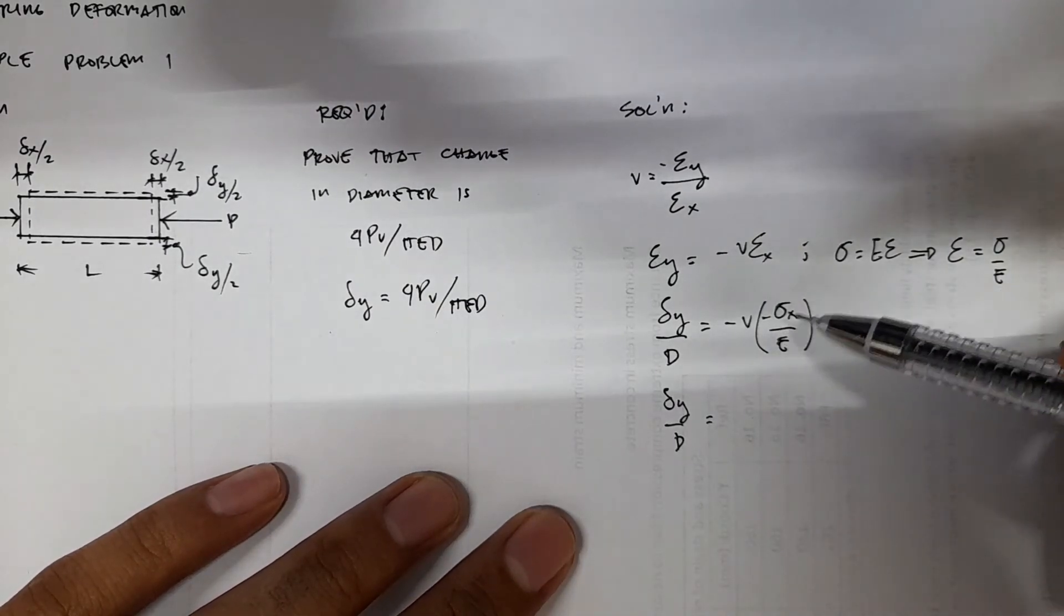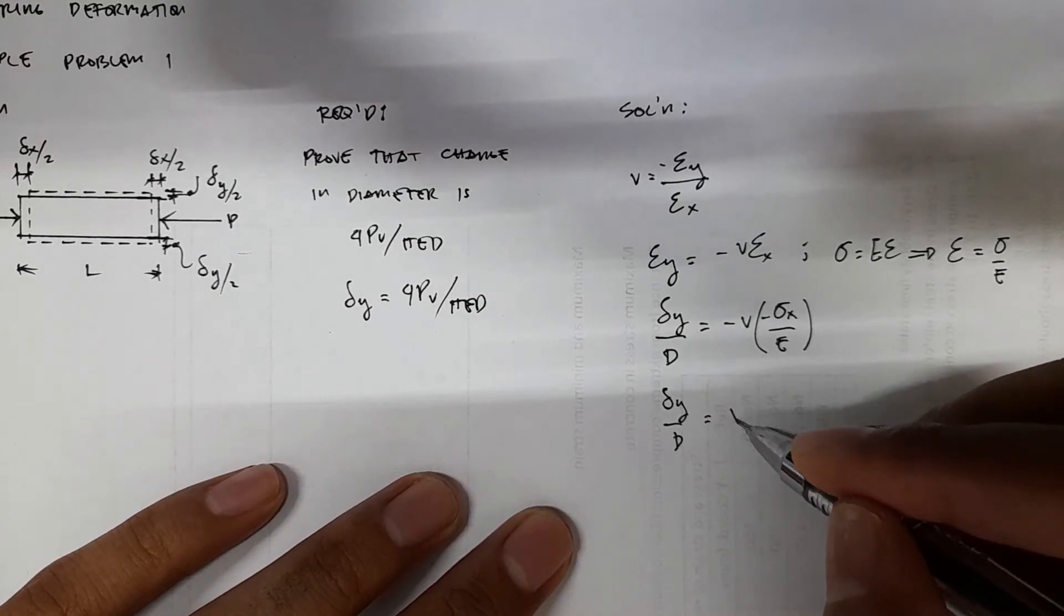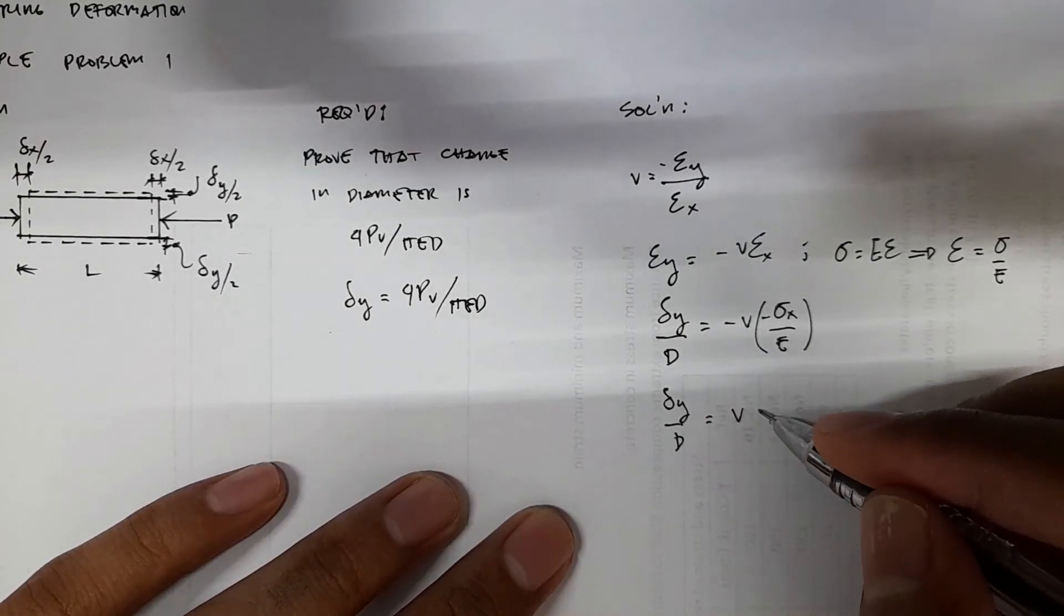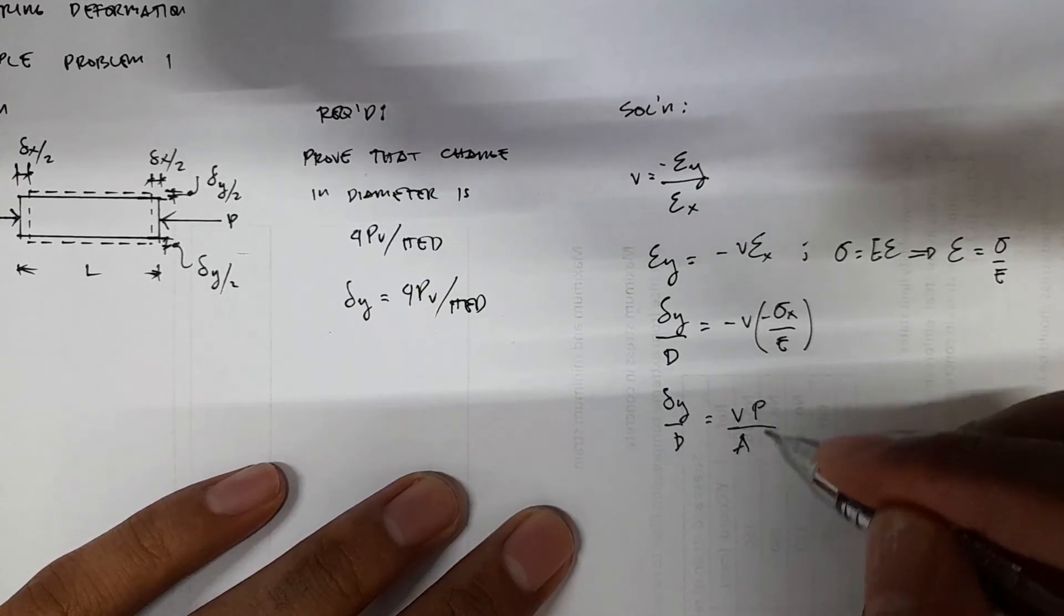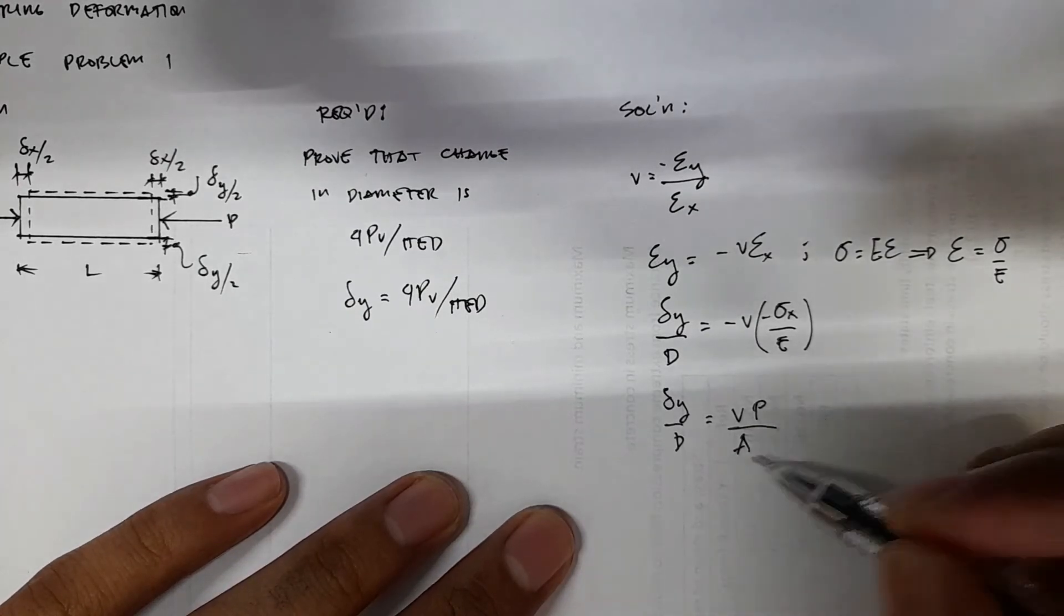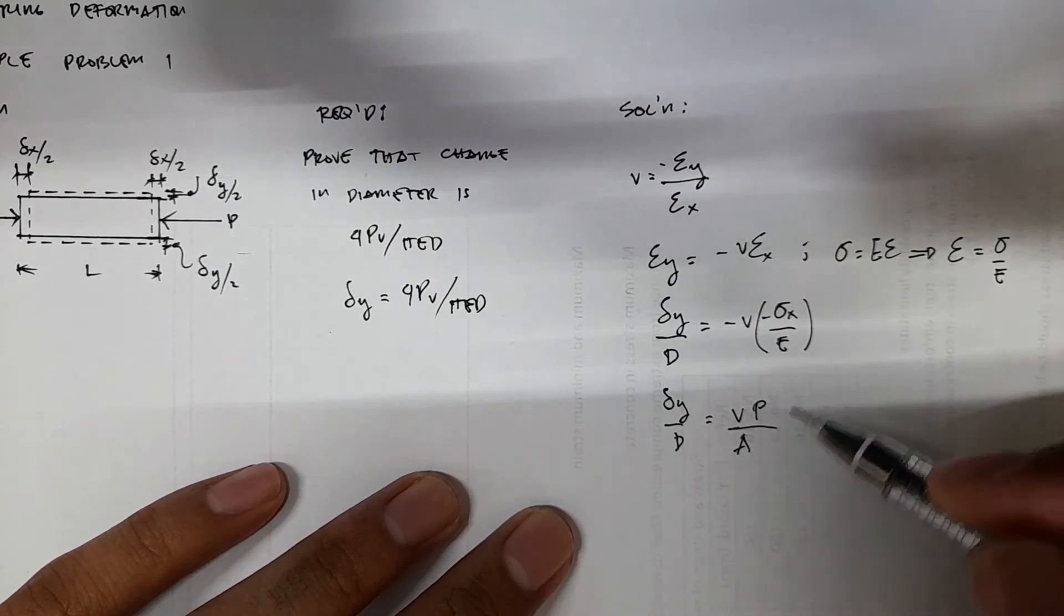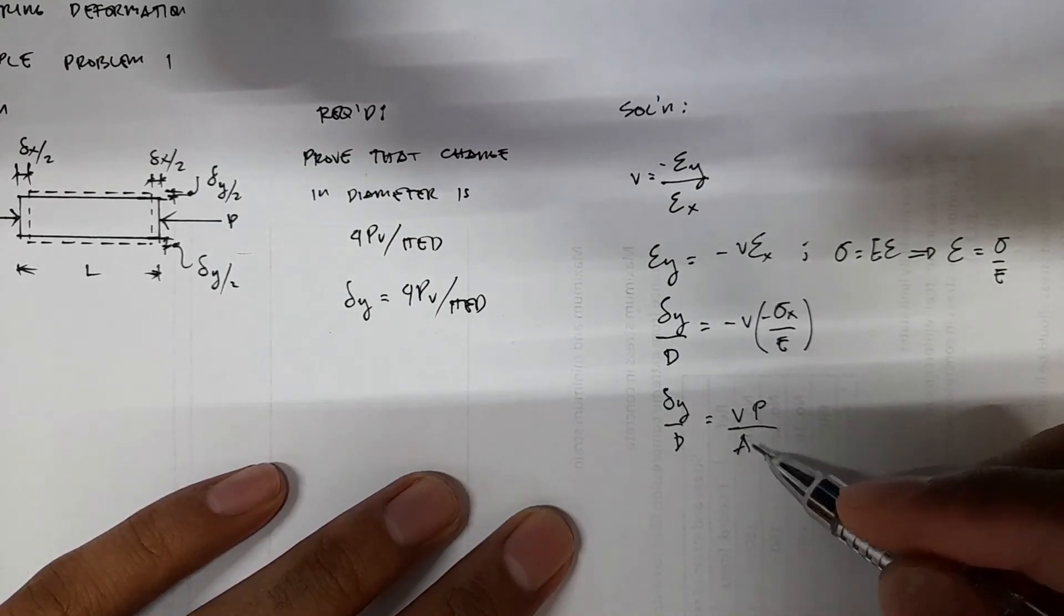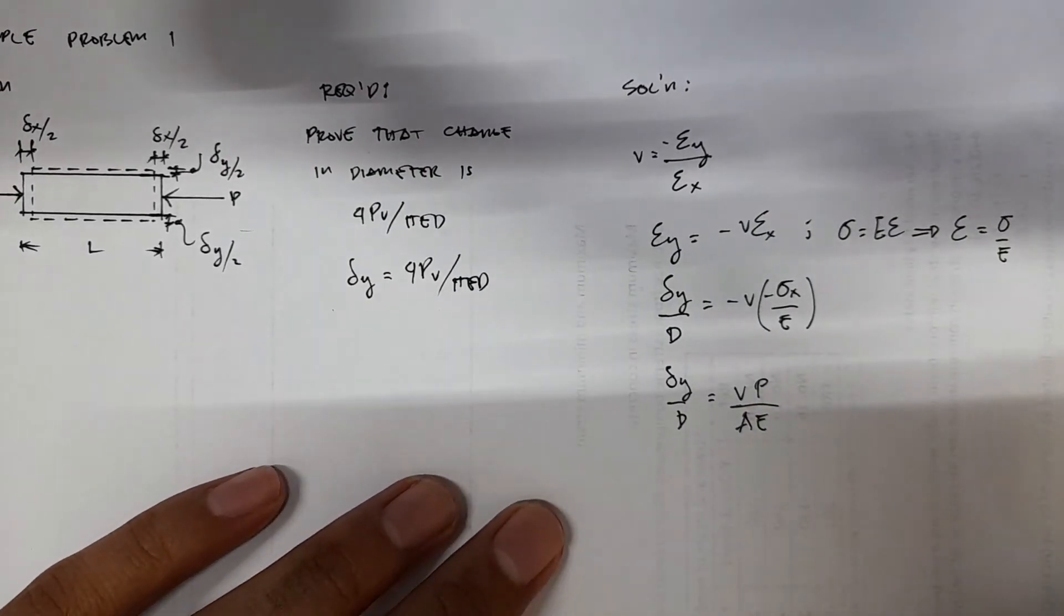The stress x here, you can also break this into P over area. So you have positive V, then you have the P over area. So this is now your stress x. A now here is the area where the forces P are acting. So this A is carrying the forces P, or the compressive forces.